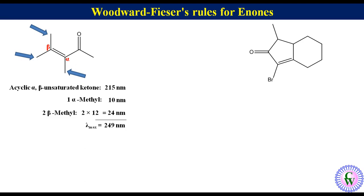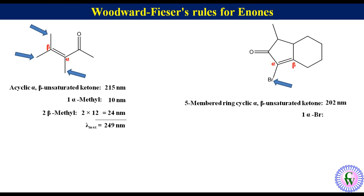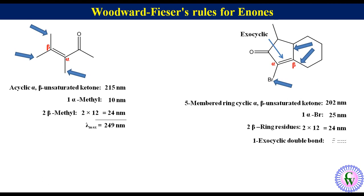In the next example, this is the alpha carbon and this is beta. The ketone is a five-membered ring alpha-beta unsaturated, so the base value is 202 nm. Bromine is at the alpha position, adding 25 nm. There are two ring residues at the beta position, adding 2 × 12 = 24 nm. The double bond in the five-membered ring is exocyclic to the six-membered ring, adding 5 nm. Lambda max = 202 + 25 + 24 + 5 = 256 nm.